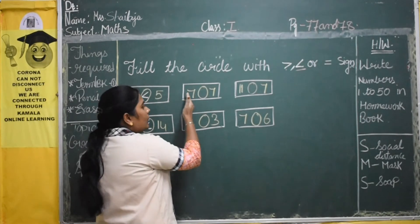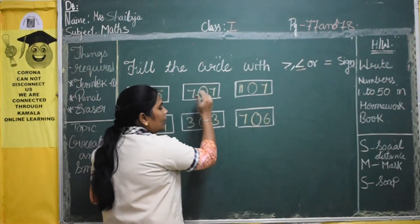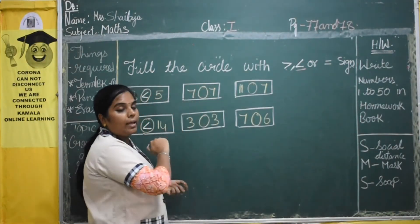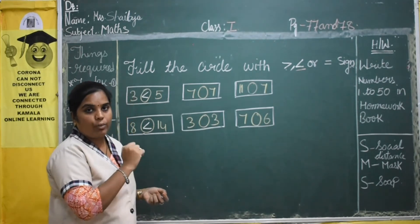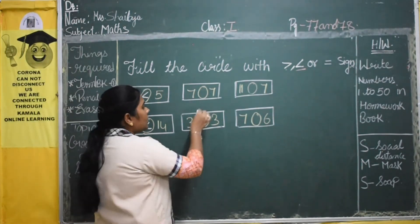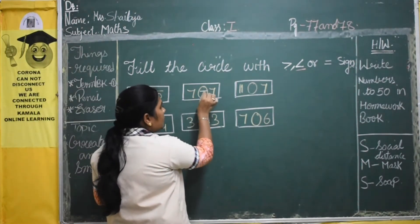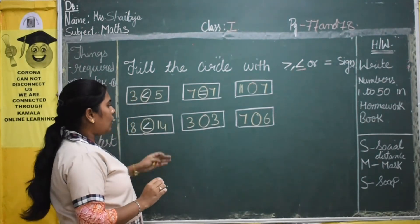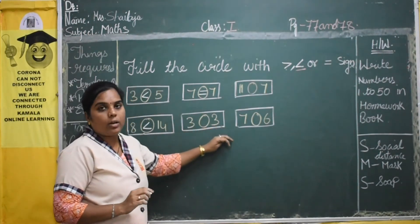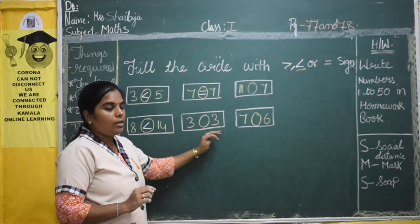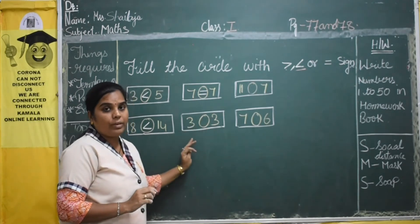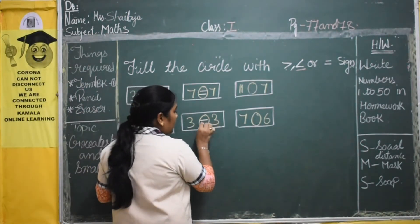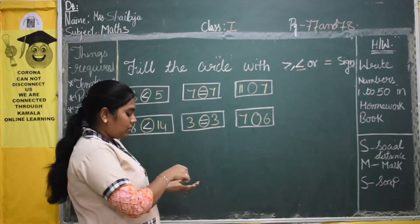Now here we have 7 and here we have 7. So both numbers are equal. So what is the equal symbol? Is equal to. Now here we have 3 and here also we have 3. So both numbers are equal — which symbol will we use? The is-equal-to symbol.